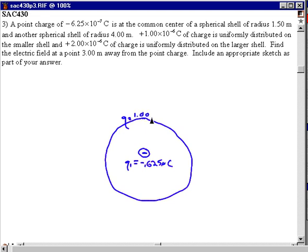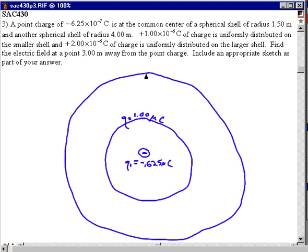So let's go 1.00 microcoulombs, and then there's an even larger shell, a perfectly spherical shell having positive 2 microcoulombs.